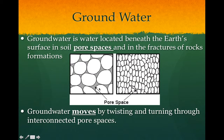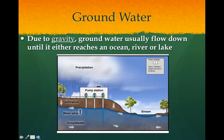Groundwater moves by twisting and turning through these interconnected pore spaces. That's a key word: pore spaces. Due to gravity, groundwater will flow and it doesn't just stay in the ground but it'll flow down, it'll try to find the lowest point until it either reaches an ocean or a river or a lake, and then it'll keep on flowing.